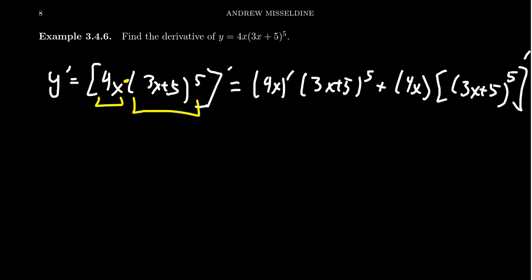The derivative of 4x is simple enough. The derivative with respect to x is just going to be 4. So we get 4 times 3x plus 5 to the fifth power. Copy down the 4x here. Then the next part is where it might be the trickiest.